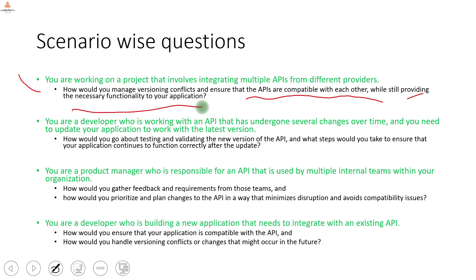You are a developer building a new application that needs to integrate with an existing API. How do you ensure compatibility and handle future versioning conflicts? Most of these questions have similar answers: clear documentation, API spec, metrics, and monitoring should be in place to address these changes.